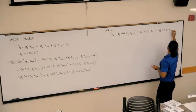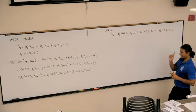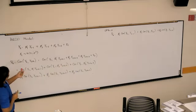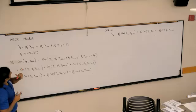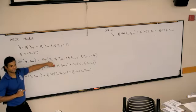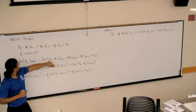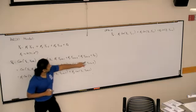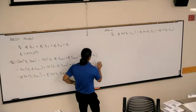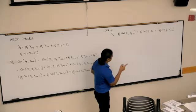plus phi 3, covariance of YT comma YT minus 3, plus covariance of epsilon T comma YT. So that epsilon T will correlate with that epsilon T. So the last term is actually not zero.